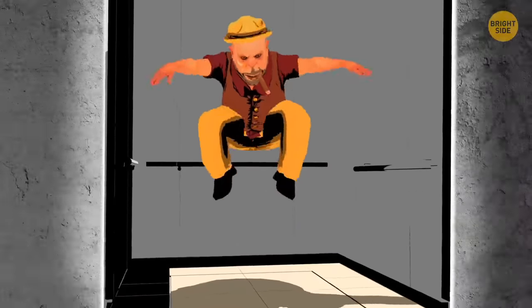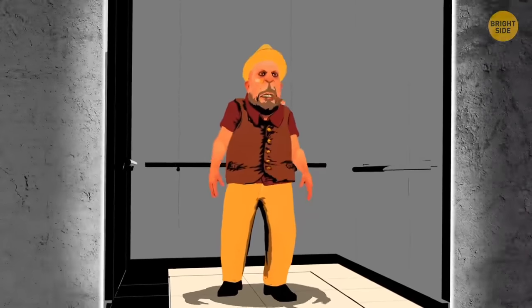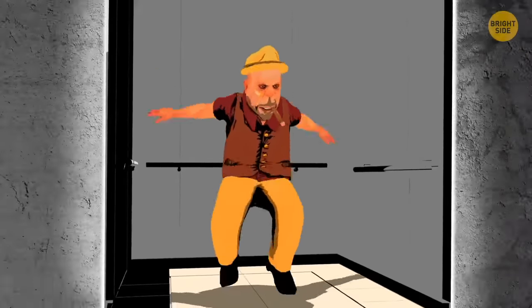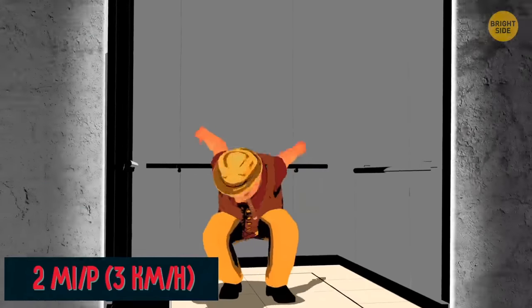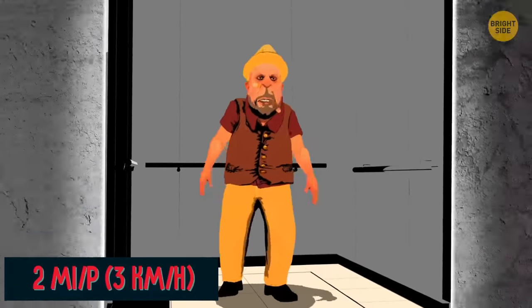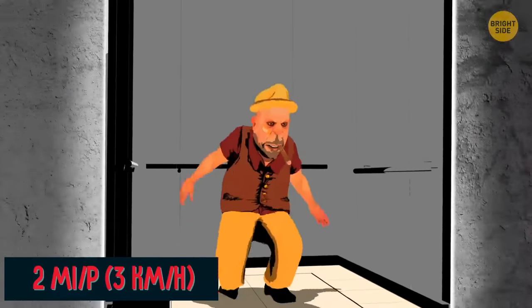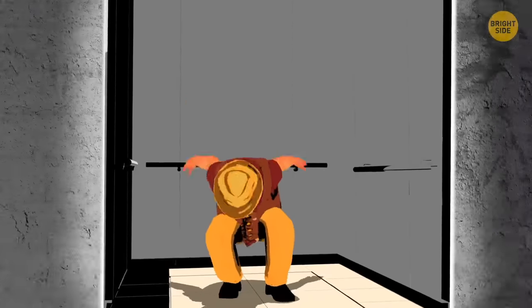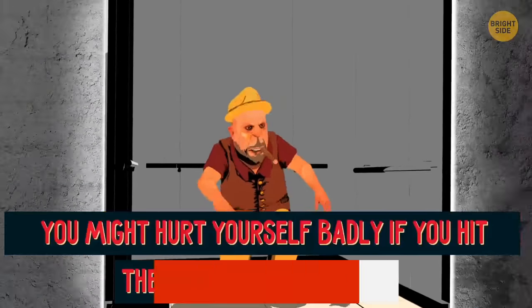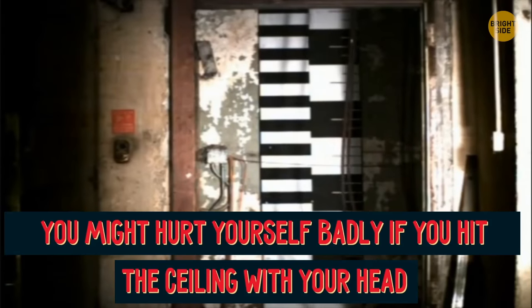Secondly, even if you somehow manage to jump, which is extremely difficult due to being in a free fall, the speed decrease you can hope for is about 2 miles per hour or 3 kilometers per hour. It's definitely not enough to save your life. What is worse, you might hurt yourself badly if you hit the ceiling with your head. Jumping is not worth the risk at all.